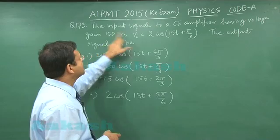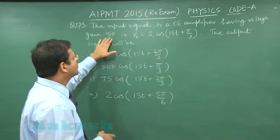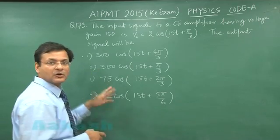So here the input signal will simply be multiplied by gain, that is 150. So 150 into 2, that is 300. So in your option the amplitude should be 300. So these two options are gone.